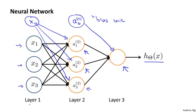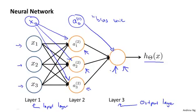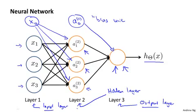To introduce more terminology: in a neural network, the first layer is called the input layer, because this is where we input our features x1, x2, x3. The final layer is called the output layer, because it has the neuron that outputs the final value computed by the hypothesis. Layer two, in between, is called the hidden layer. The intuition is that in supervised learning you get to see the inputs and the correct outputs, whereas the hidden layer values are not observed in the training set — they're neither x nor y, so we call them hidden. Anything that isn't an input layer or output layer is called a hidden layer.